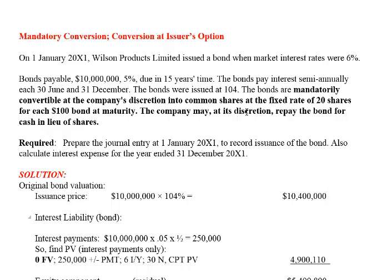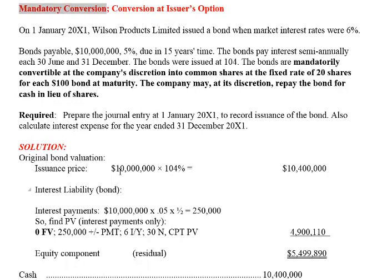That means you cannot force the company to give you cash instead of shares — it's up to the company, at their discretion. So we consider this to be mandatory conversion. Because it's mandatory, meaning it's at the issuer's option, when we're calculating the present value of the convertible bond, we do not calculate the present value of the future lump sum payment, because you can't force the issuer to make that lump sum payment. Conversion is mandatory, which means the issuer can get you to convert your bonds into shares.